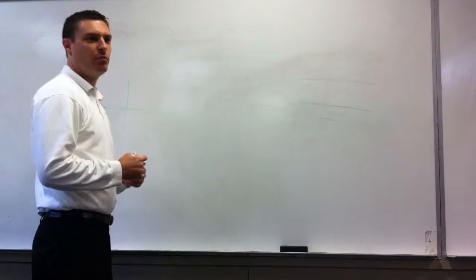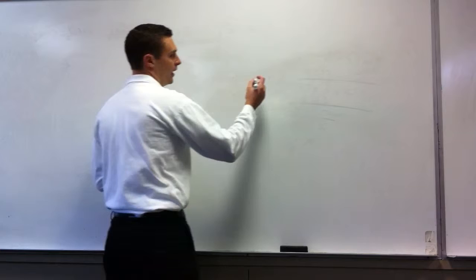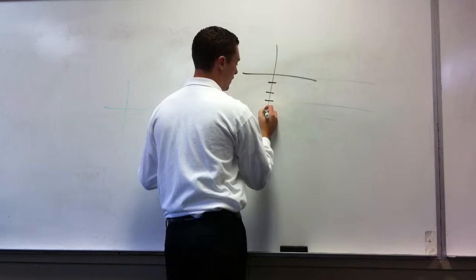Looking at example 2 in 5.1, it says write the equation of the line shown, and your line shown has a y-intercept of negative 4, is that right? And an x-intercept of 2.